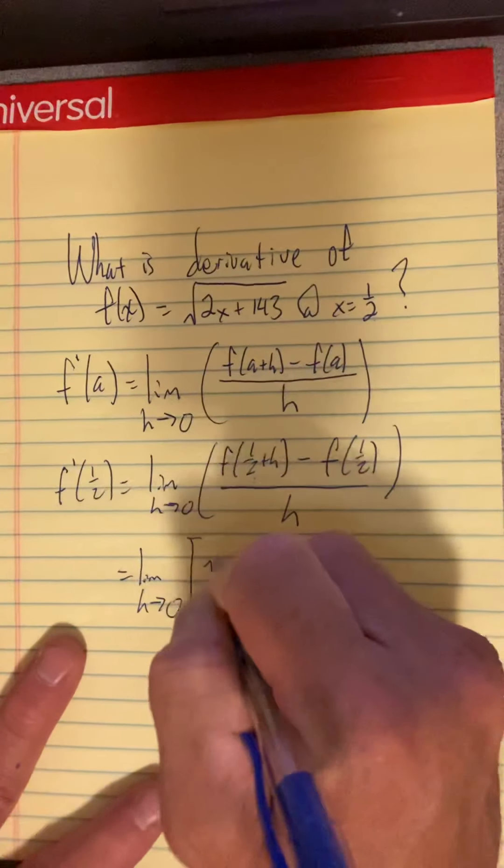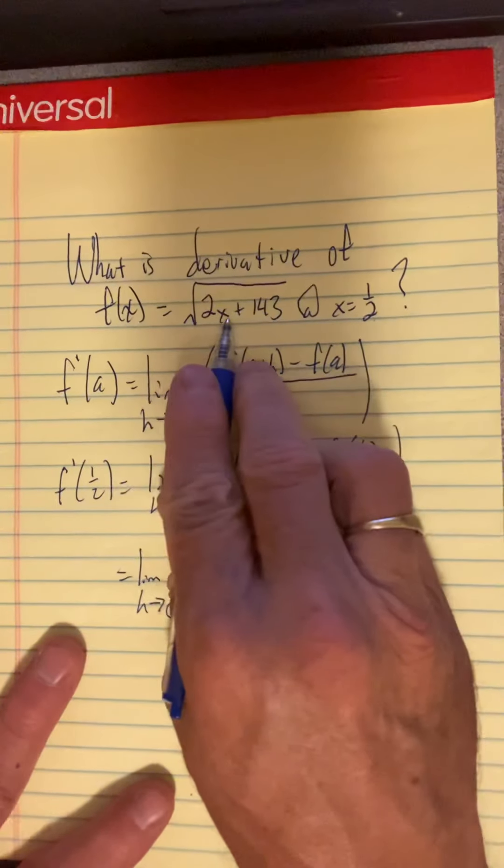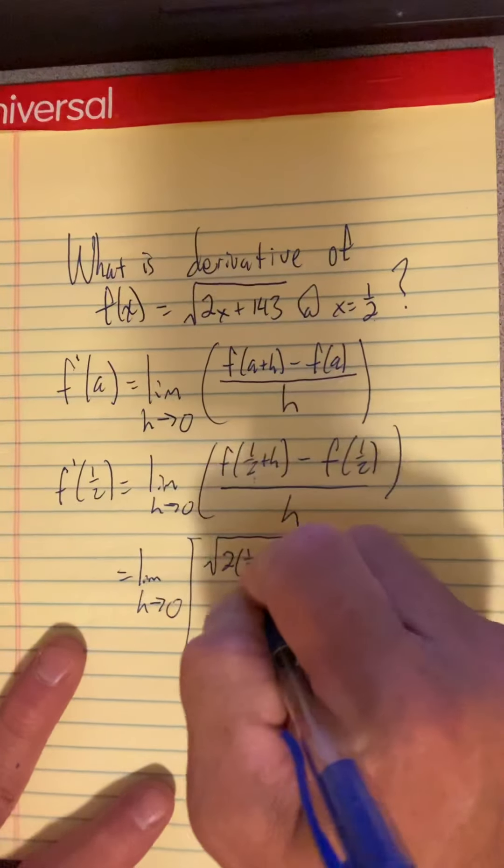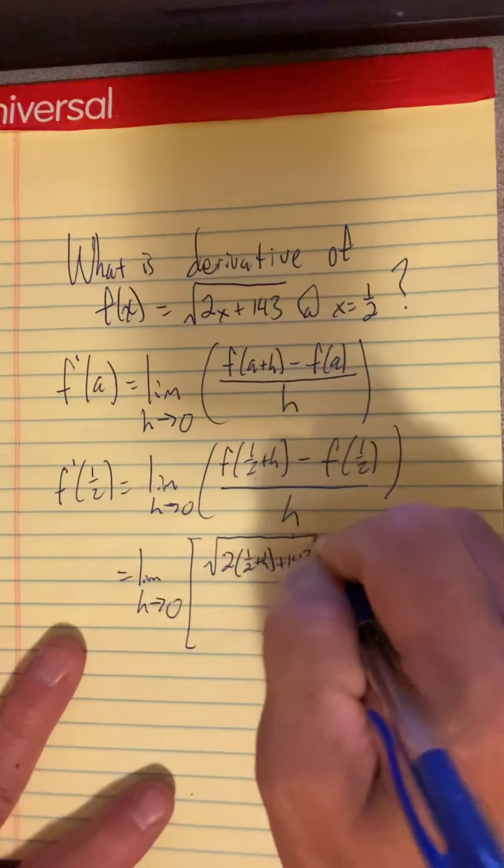So the square root function is double the x plus 143, but the input is one half plus h. It's a binomial, and then plus 143.